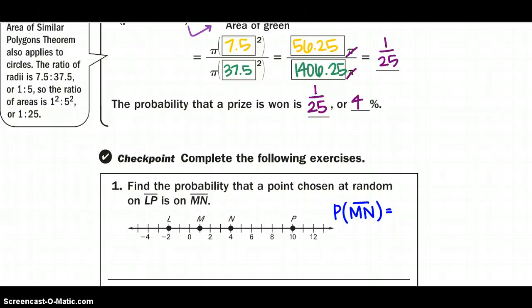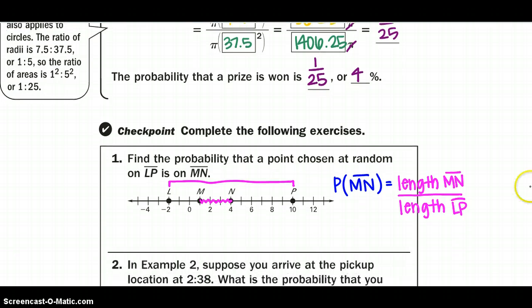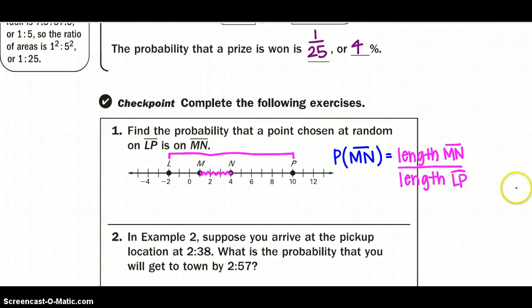So we want to find the probability that a point chosen at random ends up falling between M and N if my entire segment is LP. Alright, so remember what I want to happen is going to go on top. So the length of MN goes on top. And then the length of LP is going to go on the bottom. Alright, go ahead and find those two lengths and solve it out. I will be checking these three problems.